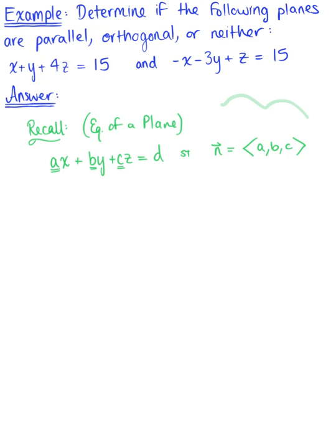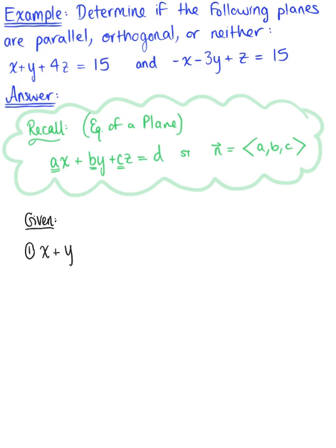So now that we have refreshed our memories on the equation of a plane and how to identify the normal vector, let's think about what we are given here. So again, we are given two beautiful planes. We have the first plane defined as x plus y plus 4z equals 15. And looking at this plane's coefficients, or the coefficients of each variable, we can see that the normal vector of the first plane has the components 1, 1, 4.